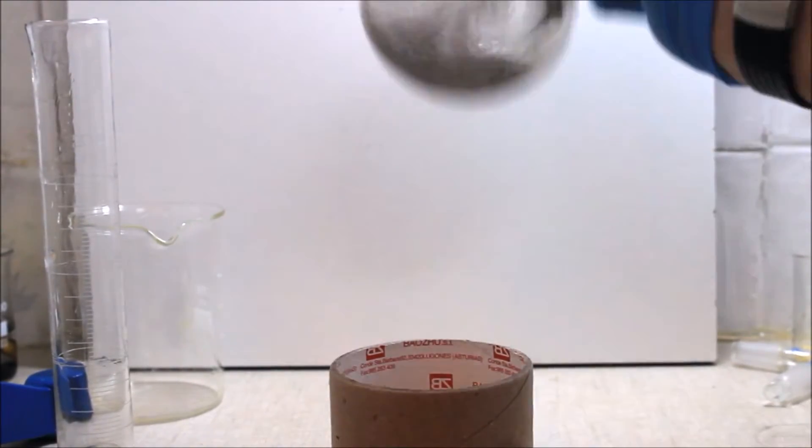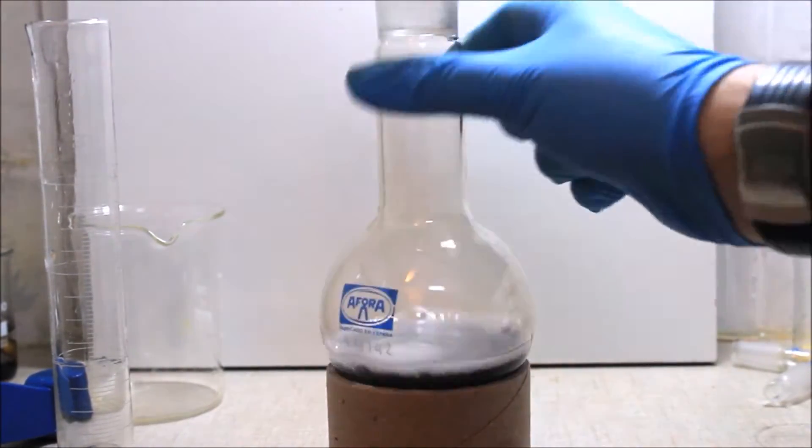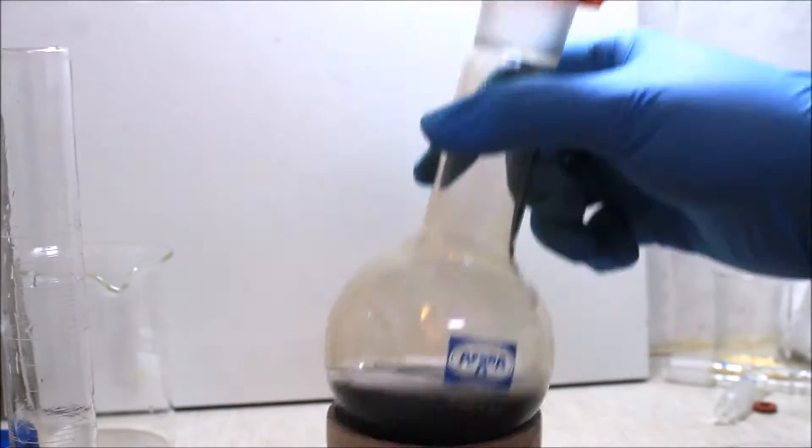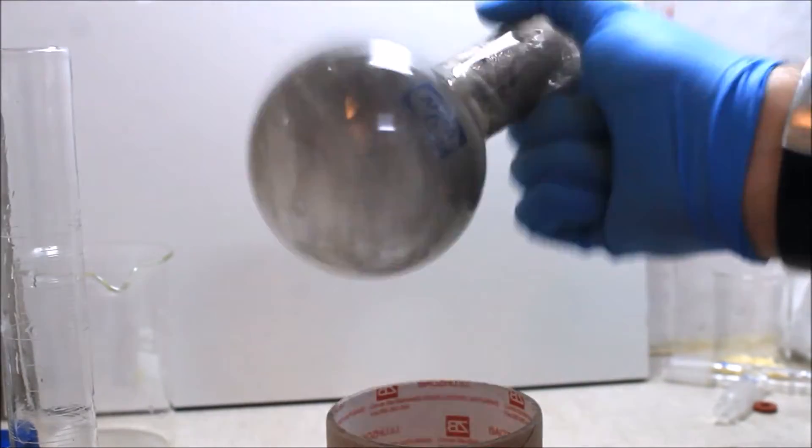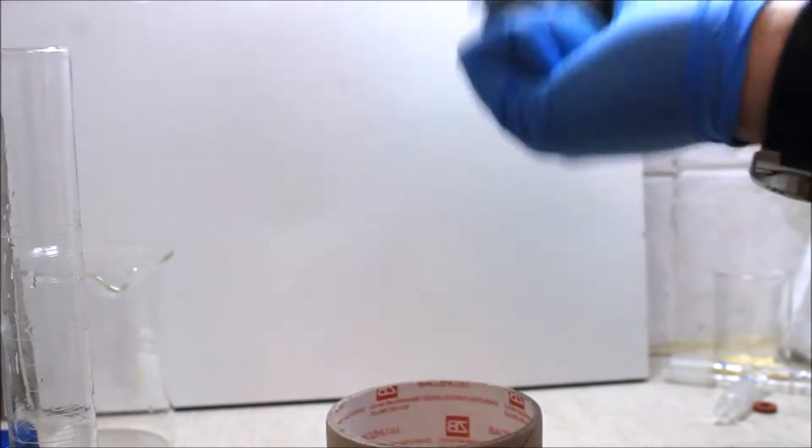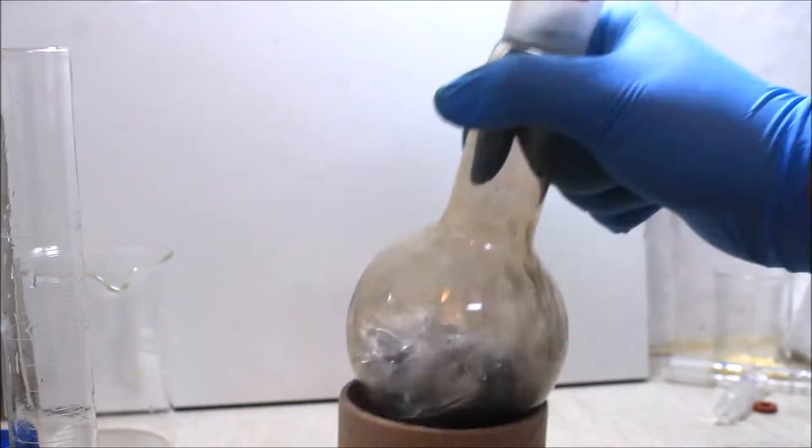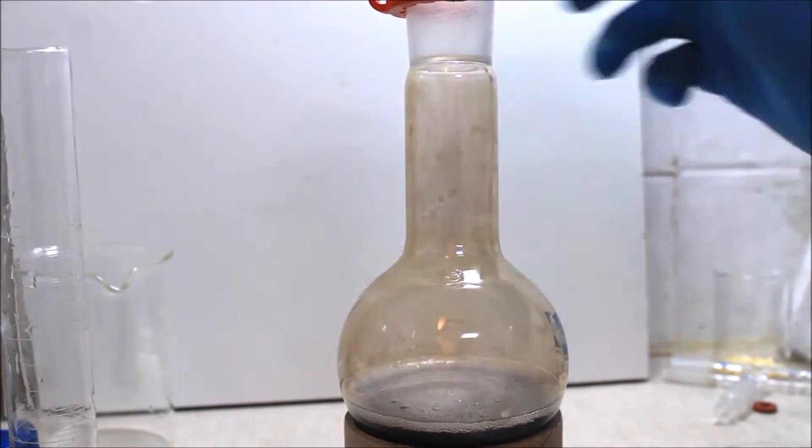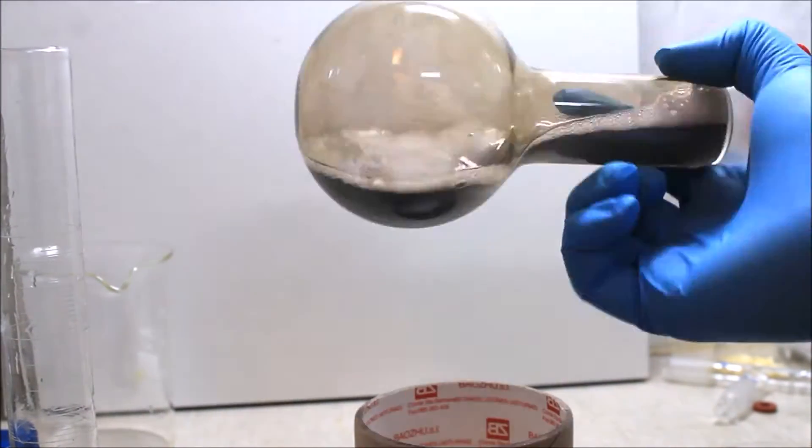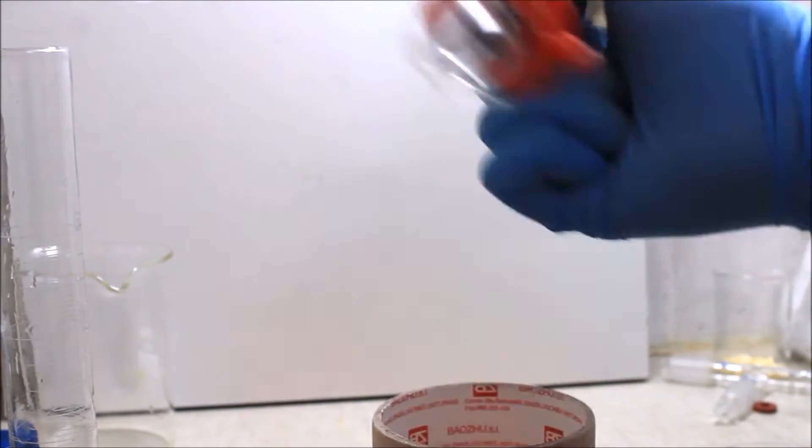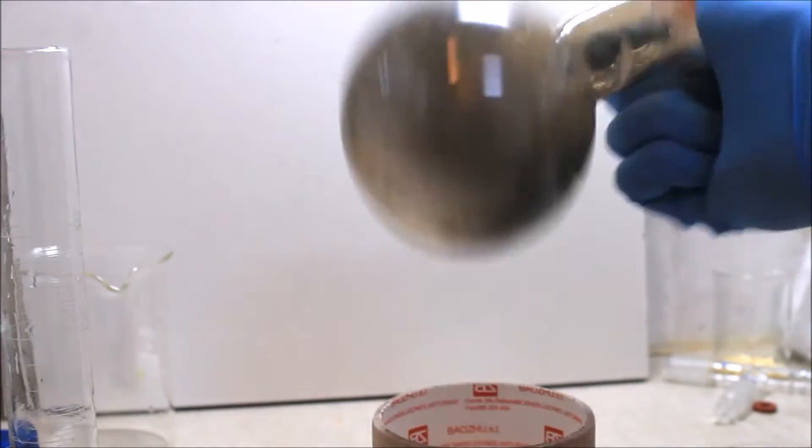As the reaction proceeds, the glucose reacts with the silver diamine complex in the presence of hydroxide to produce metallic silver. As you can see, the solution goes from a yellow to a brown-black color corresponding to the presence of silver microscopic particles in suspension.